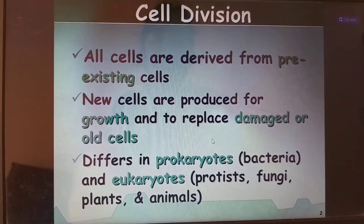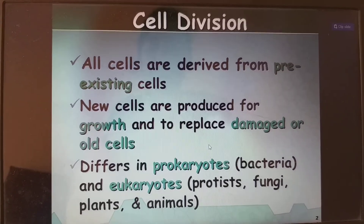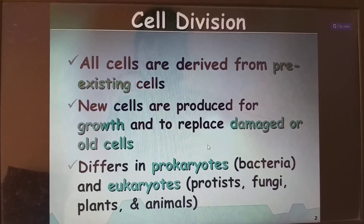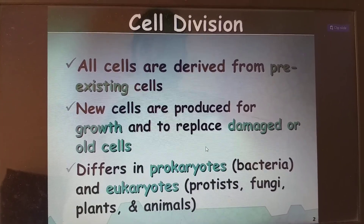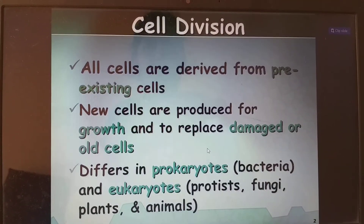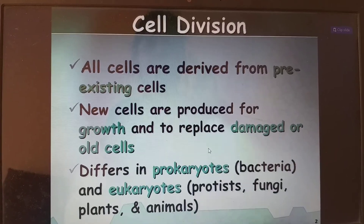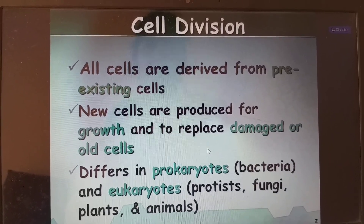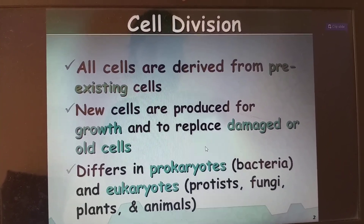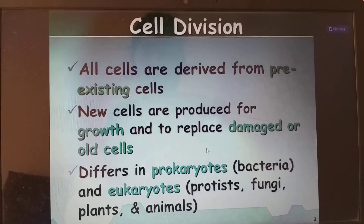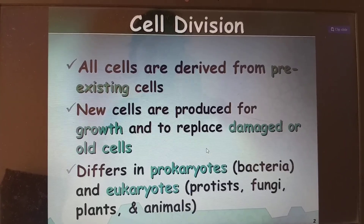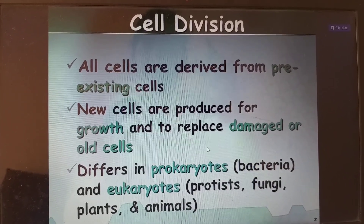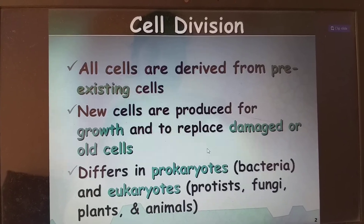Coming to the first point: all cells are derived from pre-existing cells. This point has been confirmed by Rudolf Virchow, who completed the whole cell theory. New cells are produced for growth and to replace damaged or old cells.